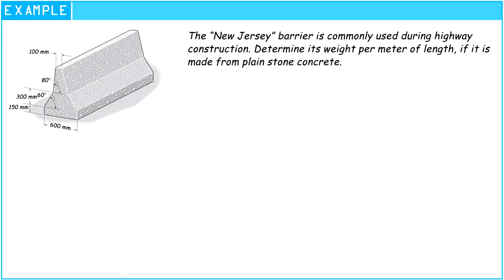The New Jersey barrier is commonly used during highway construction. Determine its weight per meter of length if it is made from plain stone concrete.